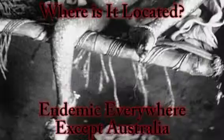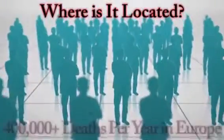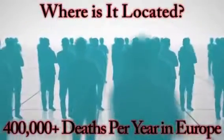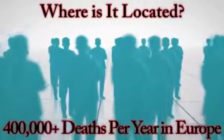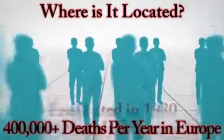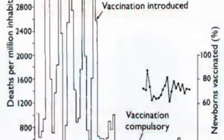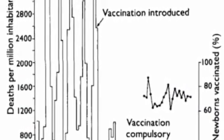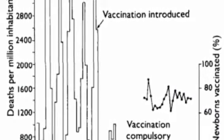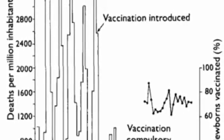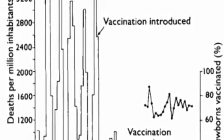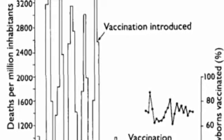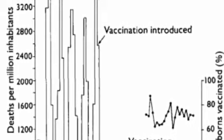Smallpox killed more than 400,000 people and was eradicated by the World Health Organization in the 1980s. Smallpox wiped out a large part of the population — it killed nine-tenths of the people it infected. At one point it got so bad that diseases were killing more Americans than weapons were. Here's a graph showing the deaths per million people and what happened when the vaccination was introduced.